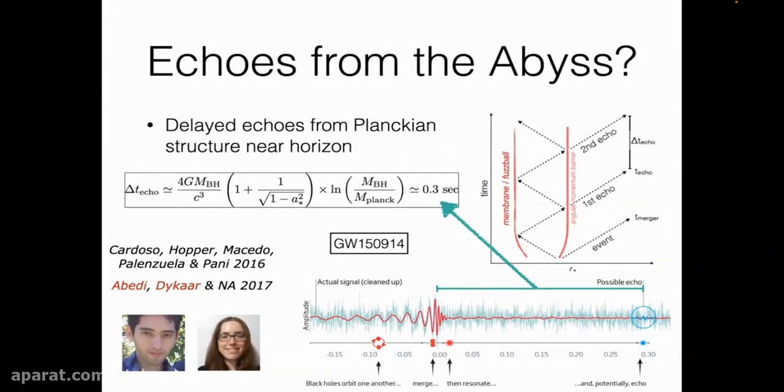There is physical quantum structure there. What happens is waves, it could be photons in principle, although there's a technical reason why it doesn't quite work for photons. But in particular, gravitational waves can actually be trapped between these two barriers: between the angular momentum barrier, which is classical, and the quantum barrier, which is either fuzzball, firewall, or something else.